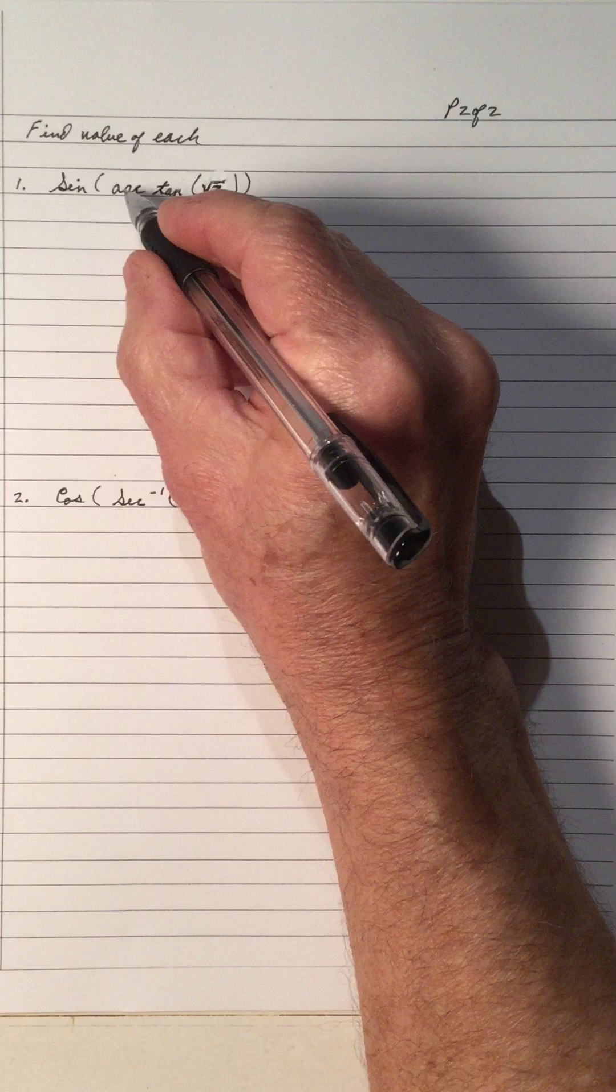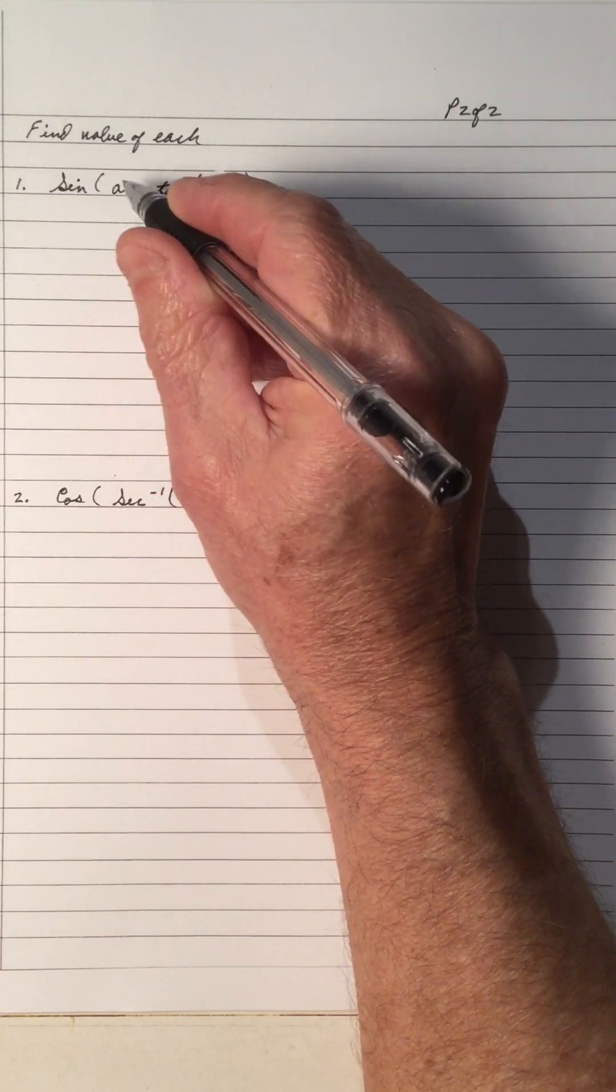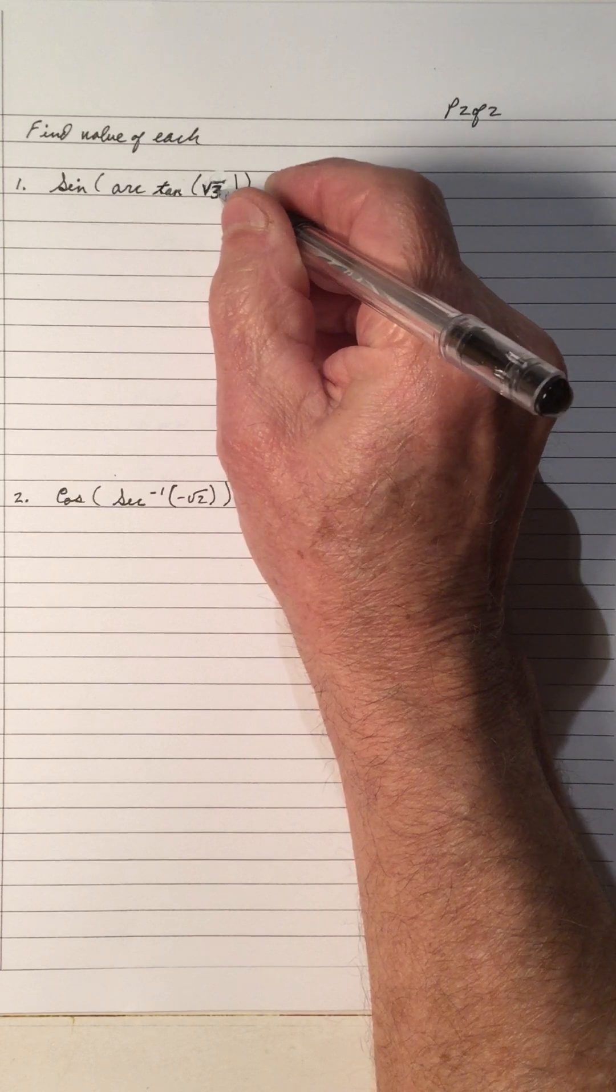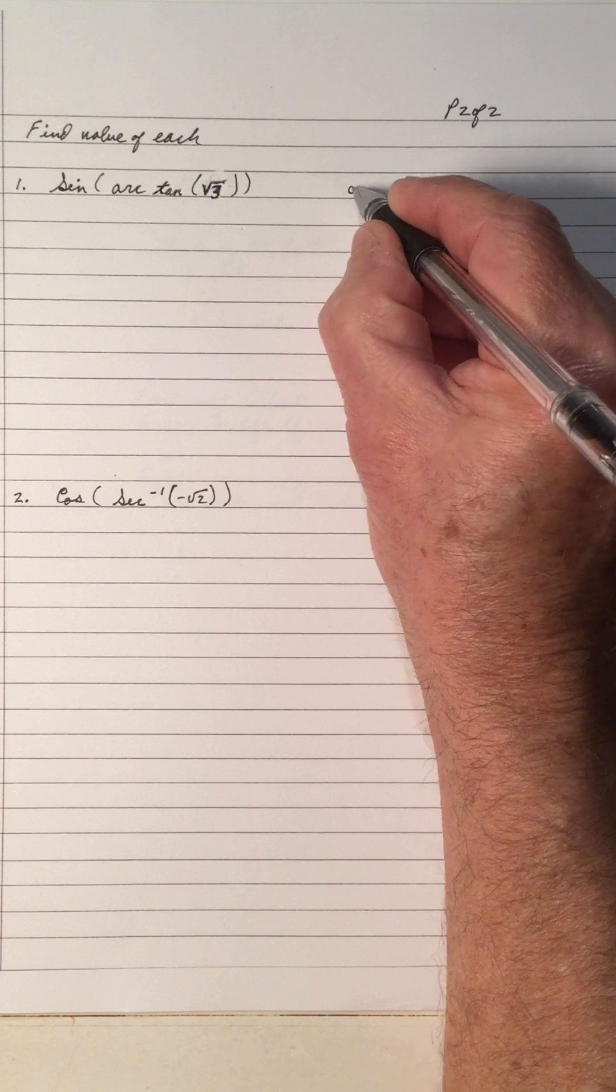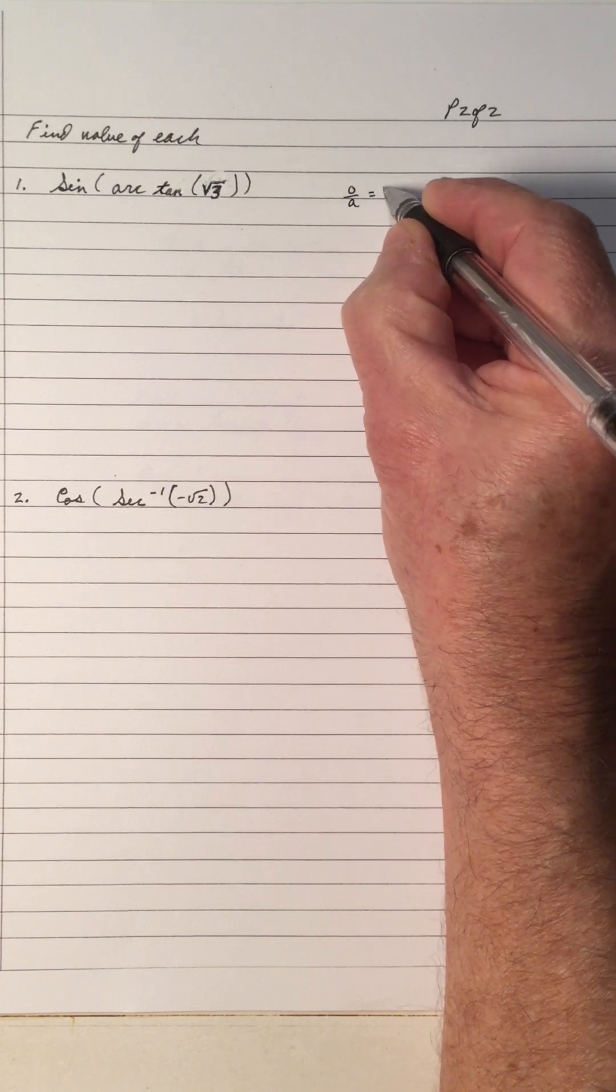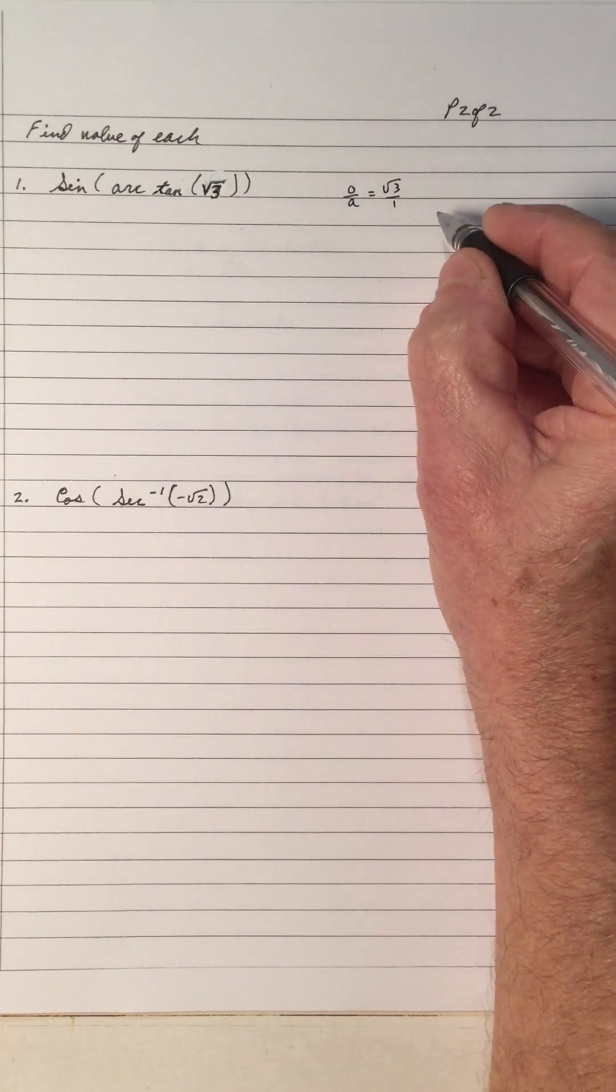So the arc tan is inside and the sine is outside. So the sine of the arc tan of root 3. Well, root 3 tan is opposite over adjacent. So that's root 3 over 1.